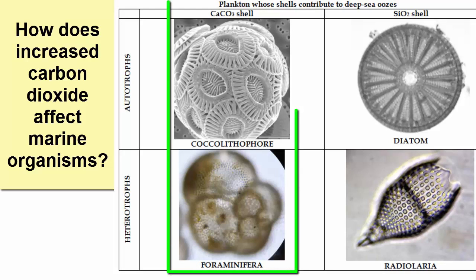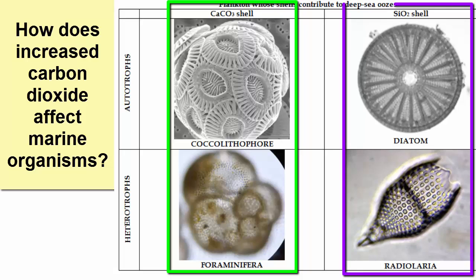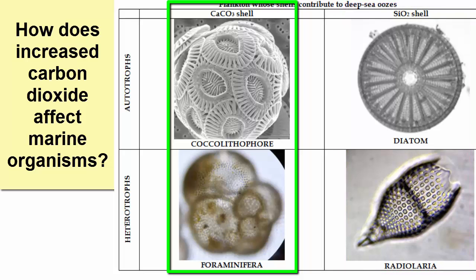On the left, we have coccolithophores and foraminifera, both with carbonate shells. On the right, we have diatoms and radiolarian, both with shells made of silica. Let's take a look at how the carbonate shells react to acid.